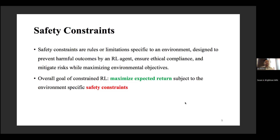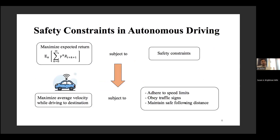Let me introduce some examples of safety constraints. For autonomous driving, a car wants to maximize some notion of the reward function during operation, but subject to safety constraints such as traffic rules, speed limits, and safe following distance between the vehicle and other vehicles. Those are some safety constraints we can imagine for the autonomous driving application.